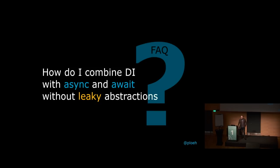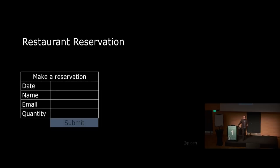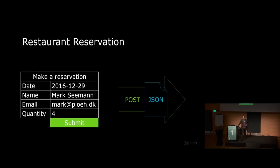I'll start by showing a code example of what I mean. Whenever I show a code example I prefer to reuse the same scenario — an online restaurant reservation system. This is a system where you find a form on a website, fill in the date and other reservation information, press submit, and that creates a JSON document posted to an HTTP endpoint. The code we'll look at is that server-side HTTP endpoint that receives the JSON and decides what to do.